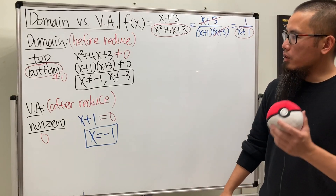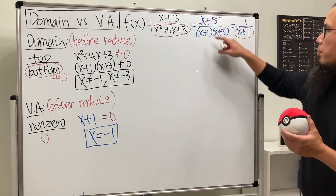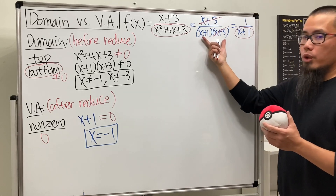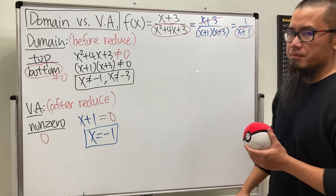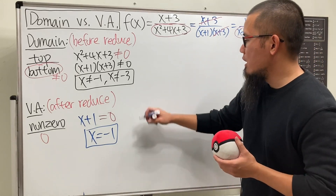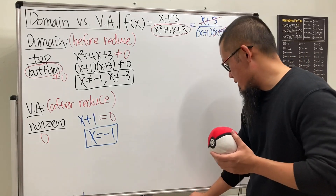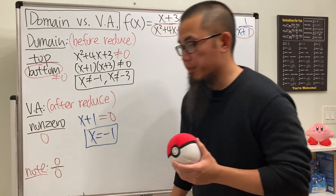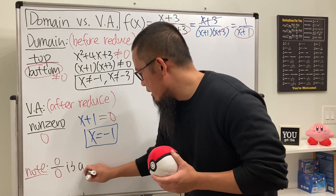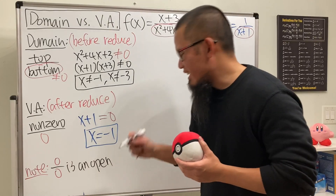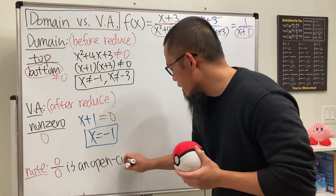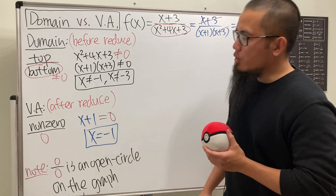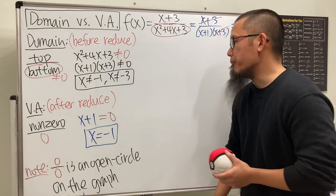What about x = -3? Notice that if you plug x = -3 into the original function, you get zero on the top and zero on the bottom — that's the zero-over-zero case. If we have a zero-over-zero situation, that gives us an open circle — a gap or hole on the curve. You don't see the graph go straight up or straight down there.